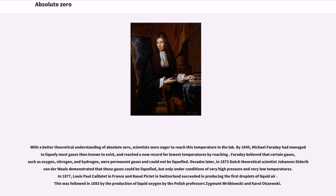Faraday believed that certain gases, such as oxygen, nitrogen, and hydrogen, were permanent gases and could not be liquefied. Decades later, in 1873, Dutch theoretical scientist Johannes Diderik van der Waals demonstrated that these gases could be liquefied, but only under conditions of very high pressure and very low temperatures. In 1877, Louis-Paul Cailletet in France and Raoul Pictet in Switzerland succeeded in producing the first droplets of liquid air. This was followed in 1883 by the production of liquid oxygen by the Polish professors Zygmunt Wróblewski and Karol Olszewski.